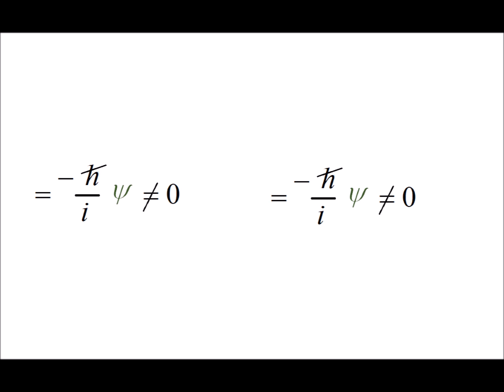We notice that the final step in each calculation is to end up with minus h bar over i times psi, and since we put in psi as essentially a dummy variable, dummy function, at the end we essentially just remove it and we notice that in each case, minus h bar over i is not equal to zero. It's the important thing which tells us that the operators in each case do not commute.